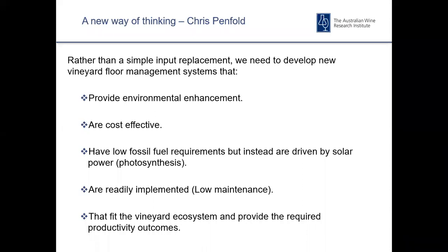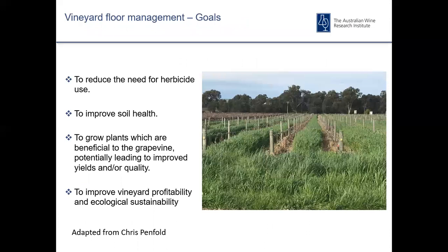Chris Penfold has provided a really good summary of how we could potentially use our floor system to benefit viticulture, and he has four goals with his philosophy. The first is to reduce the need for herbicide use. The second is improvement to soil health. Third is to grow plants which are beneficial to the grapevine, potentially leading to improved yields and/or quality. And fourth, to improve vineyard profitability and ecological sustainability.